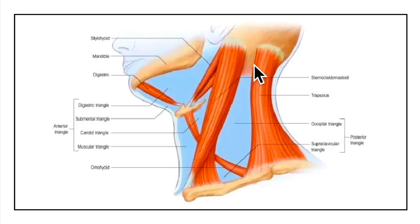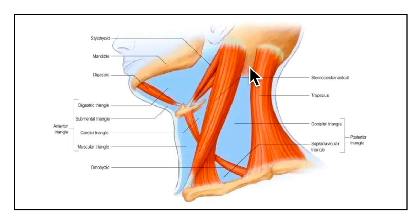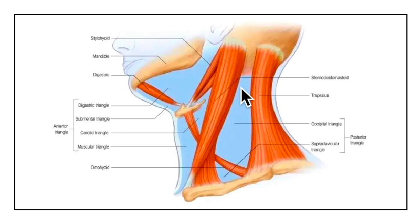To begin with, this diagram shows the sternocleidomastoid muscle and the trapezius muscle. The posterior triangle is a space on the side of the neck situated behind the sternocleidomastoid muscle.